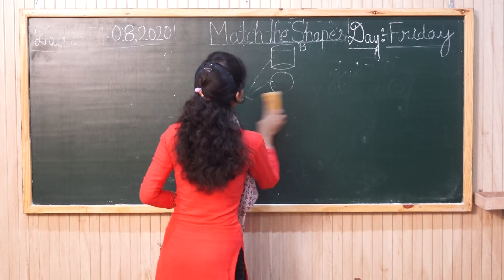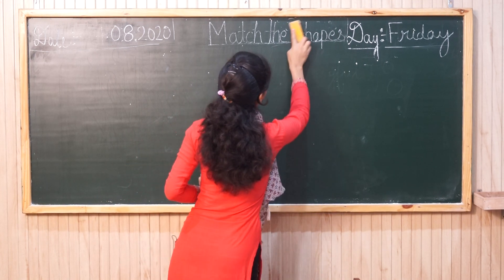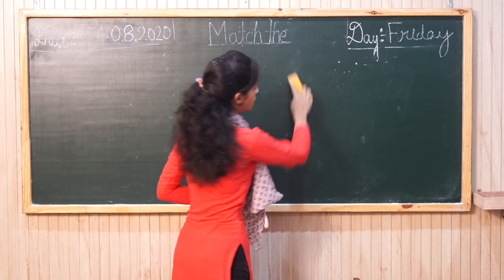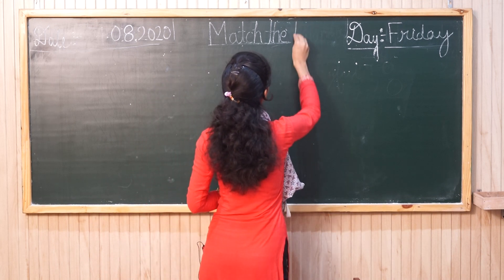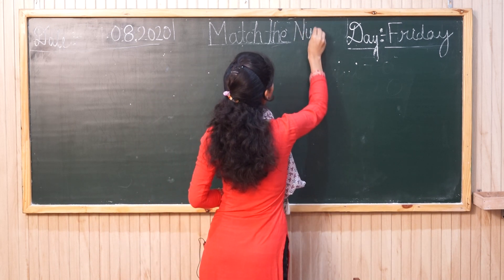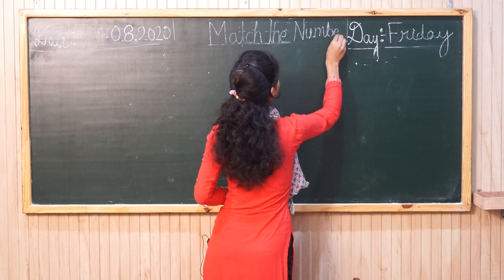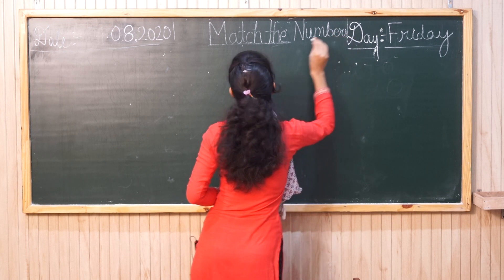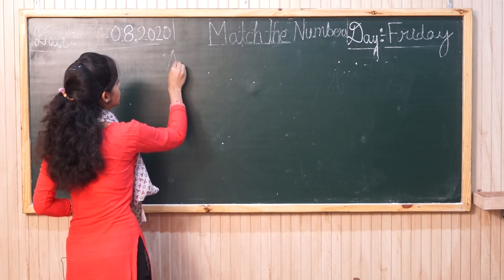Match the Numbers. What will happen with numbers? The same thing — you will match your numbers. In numbers, we have to match the numbers across two columns, A and B.